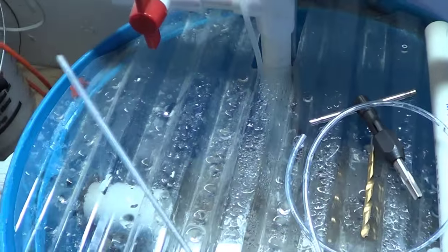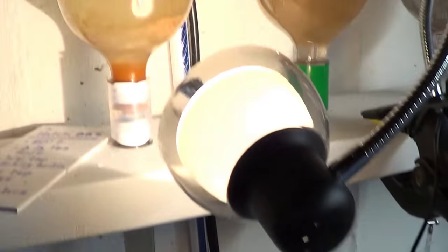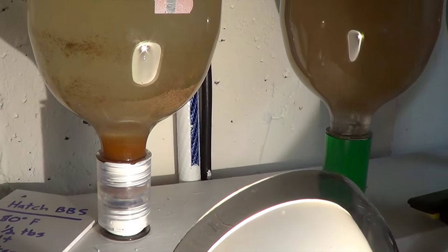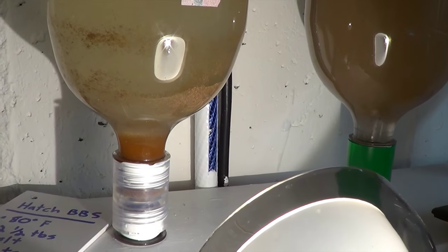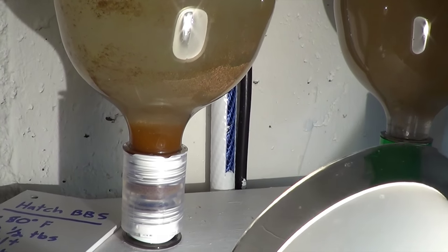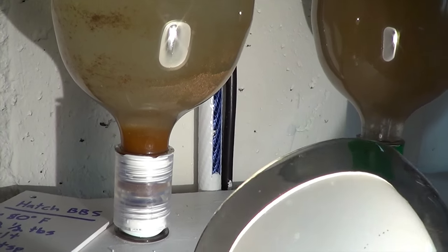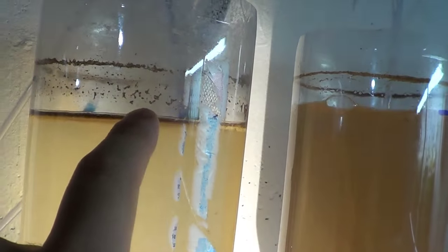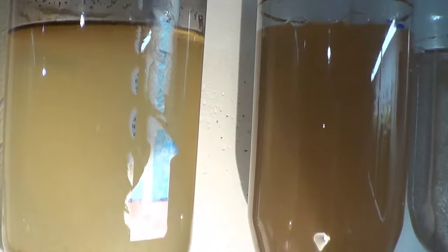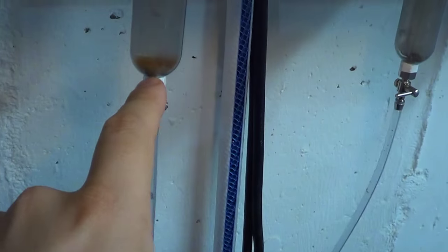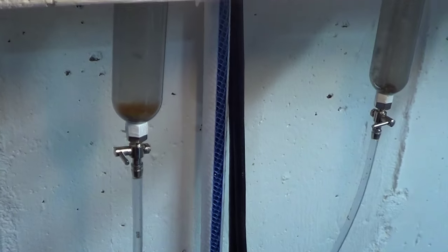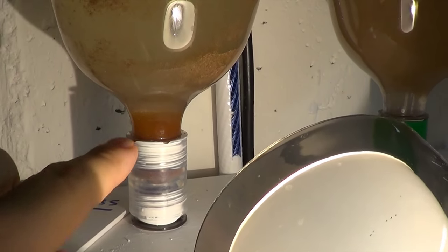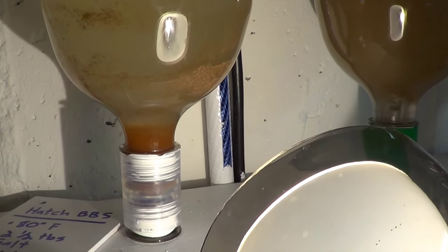So what I'm able to do is take a siphon hose, just an airline hose with a rigid air line on the end, stick that right here at the neck of the bottle and siphon 90% of those brine shrimp out in about five seconds, which is really convenient. I don't get any of the shells. All the shells are up here on the top and the empty casings and stuff usually end up on the bottom with maybe some dead brine shrimp.